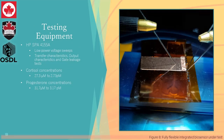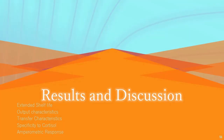Transistor output characteristics were collected using a Hewlett-Packard semiconductor parameter analyser, using low-power voltage sweeps in order to collect the transfer characteristics, output characteristics, and gate leakage tests. Using cortisol concentrations of 23 micromolar to 2.7 picomolar and progesterone concentrations of 31.7 micromolar to 3.17 picomolar, we were able to determine specificity and device reactions to concentration. Under these conditions, we examined the shelf life, output characteristics, transfer characteristics, specificity to cortisol, and amperometric response of the biosensor devices.